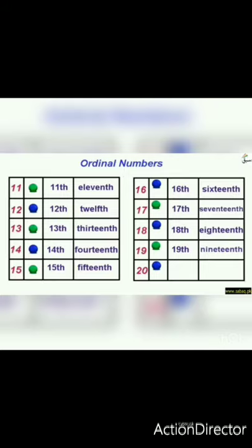After nineteen, it is twenty, and the ordinal number is twentieth. We write twenty and add TH — twentieth. The number name is T-W-E-N-T-I-E-T-H — twentieth.